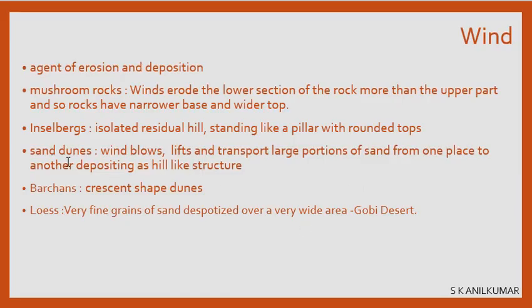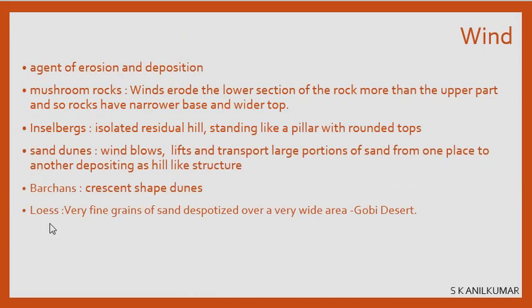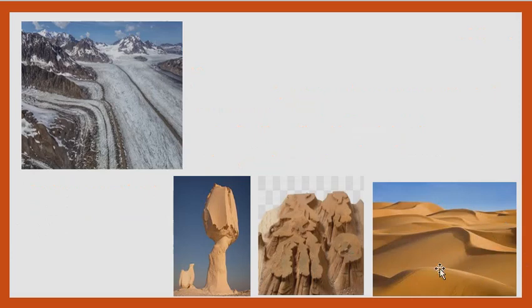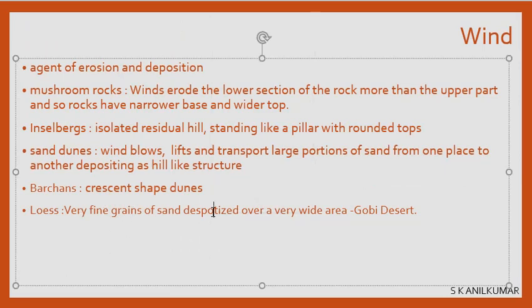Wind not only forms sand dunes but also creates barchans and loess. Barchans are crescent-shaped sand dunes — hill-like structures of sand with a crescent shape. Wind is so powerful it can move an entire sand dune — large quantities of sand from one place to another. When winds blow very fast the whole hill appears to be moving. Sand on the desert is eroded, carried, and deposited elsewhere in a hill-like form.